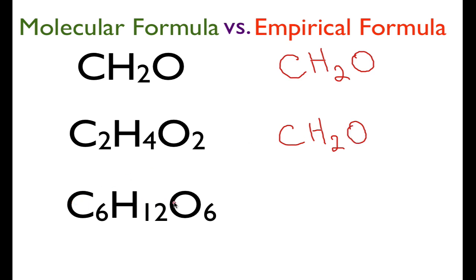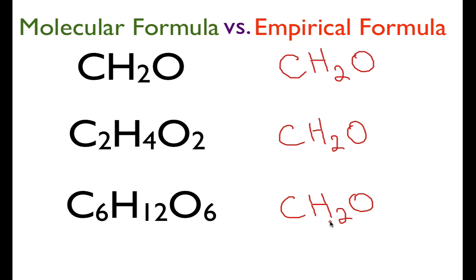For glucose, the subscripts are 6, 12, and 6. Each of those numbers is divisible by 6, so we come up with the same empirical formula — CH₂O. It's interesting to note that we have three different compounds with three different molecular formulas, but all three have the same empirical formula: CH₂O. The lowest ratio is one carbon, two hydrogens, to one oxygen; they just appear in different ratios in the molecular formula.